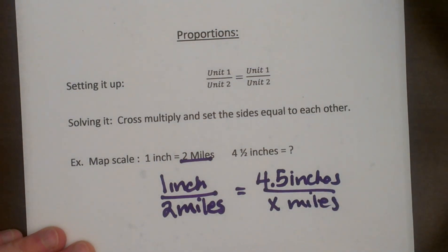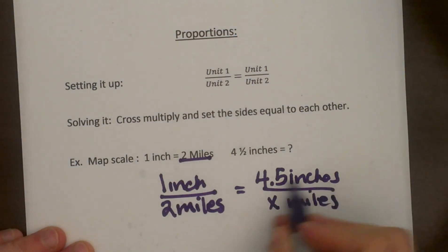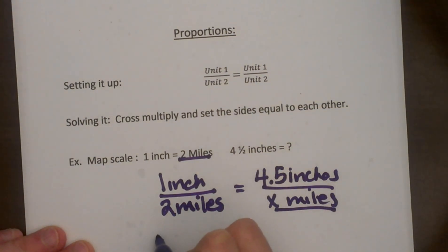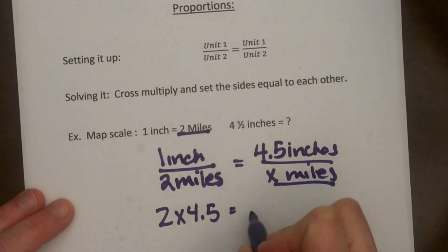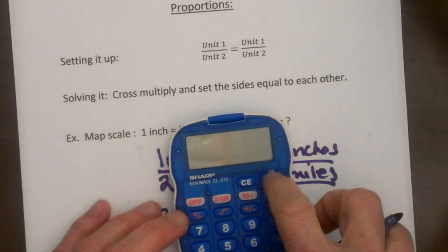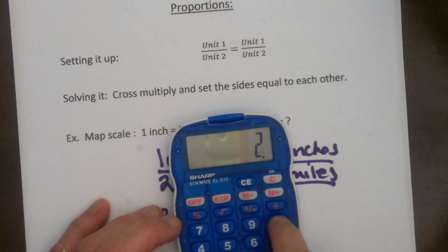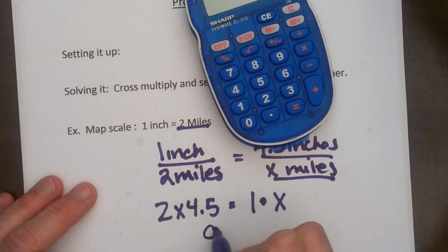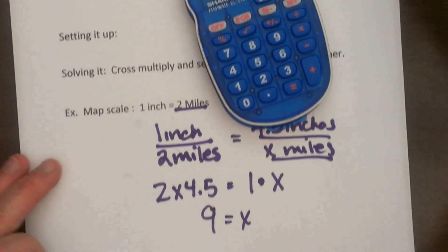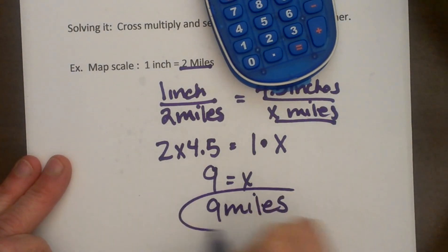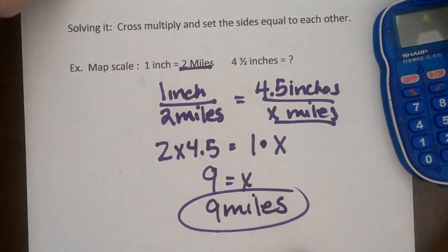Okay now at this point you can ignore your units but know that your answer is going to be of course in miles. So let's do a cross multiplying so we have 2 times 4.5 is equal to 1 times x. So grab your handy dandy calculator if you're unsure so 2 times 4.5 and that gives us 9. So 9 is equal to x. So how do we interpret that answer? Well that's 9 miles and that would be your answer.